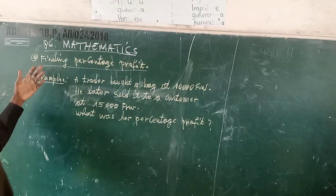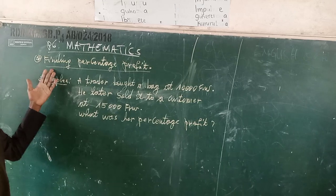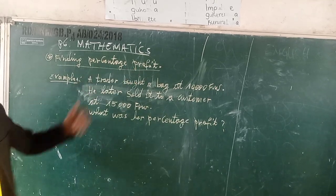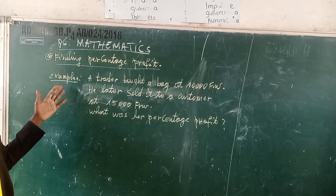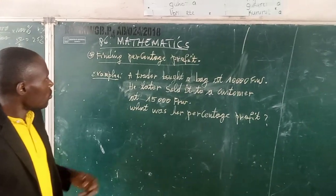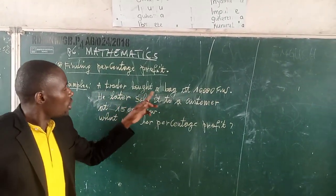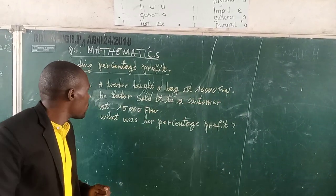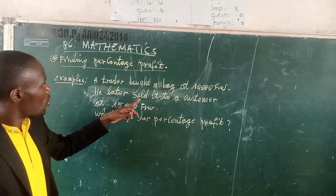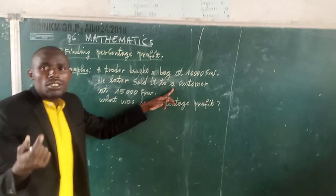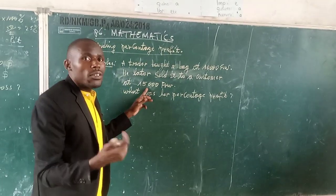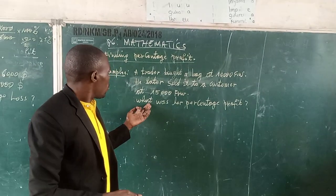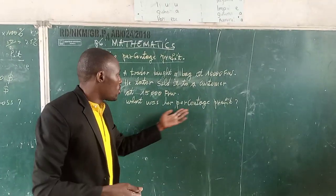Today we are going to start on finding percentage profit. Let me take an example. A trader bought a bag at 10,100 pounds. He later sold it to a customer at 15,100 pounds. What was the percentage profit? This is the question.